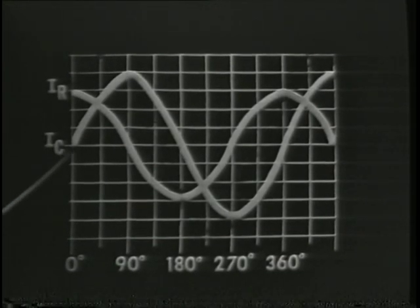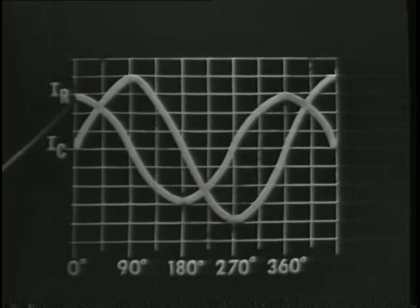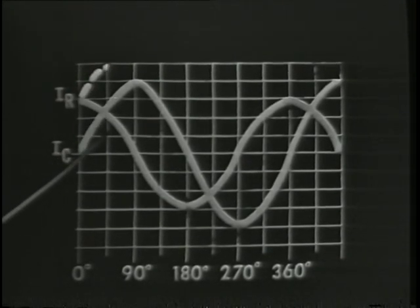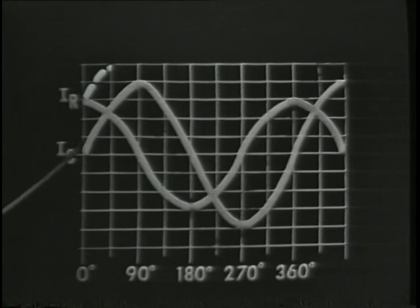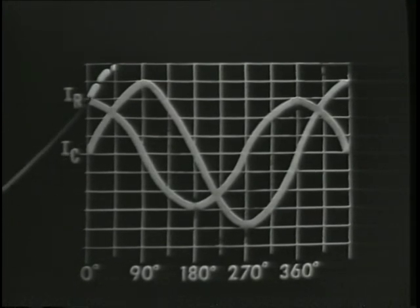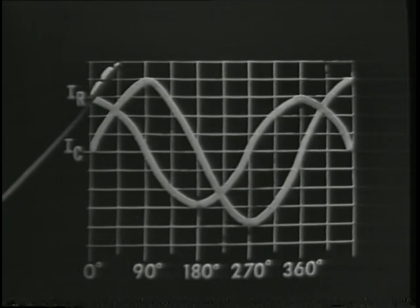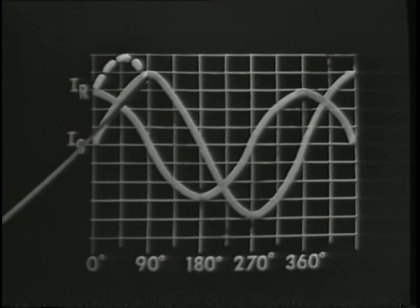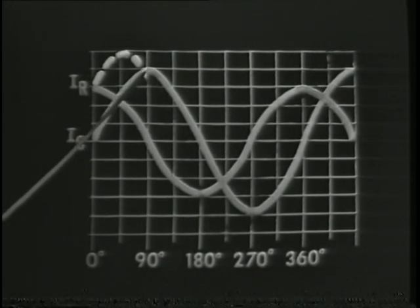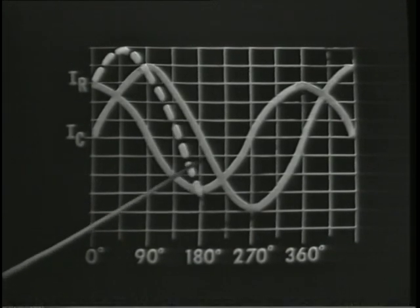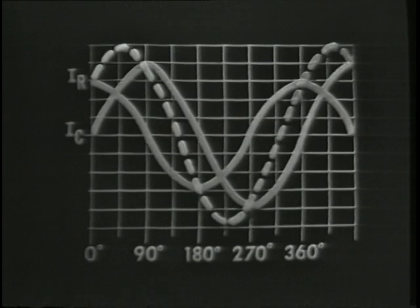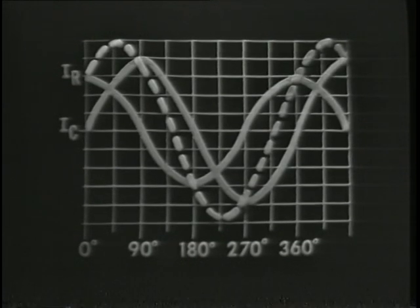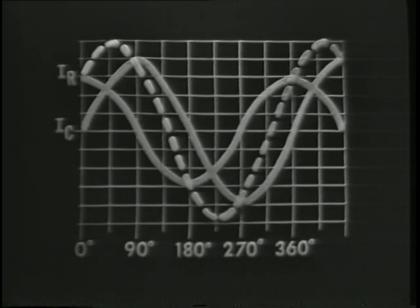For example, at zero degrees, IC is zero and IR is 30 milliamps, so the current in the circuit would be 30 milliamps. At 45 degrees, IR is about 25 milliamps and IC about 25 milliamps, thus the resultant or total current would be 50 milliamps. And at 90 degrees, IR is zero and IC is 40 milliamps, so that would be the value of the resultant current, and so on throughout the rest of the cycle. We find that the total current is greater than either of the branch currents, less than the arithmetical sum, and the phase difference is something less than 90 degrees.